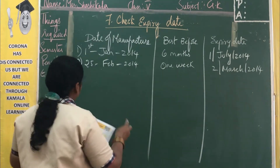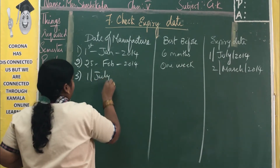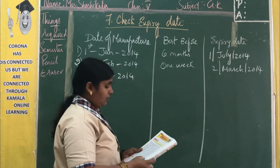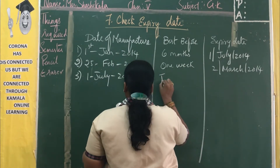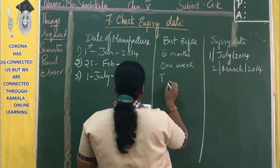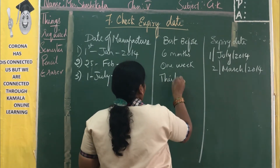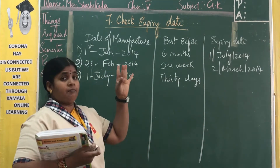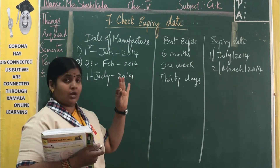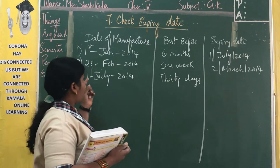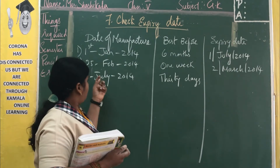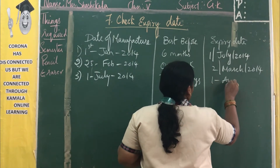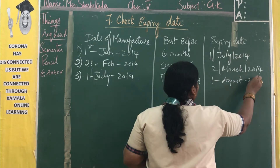Third one: 1st July 2014, best before 30 days. After July there is August. So best before 30 days — after July what will we get? We will get August. Best before: 1st August 2014.